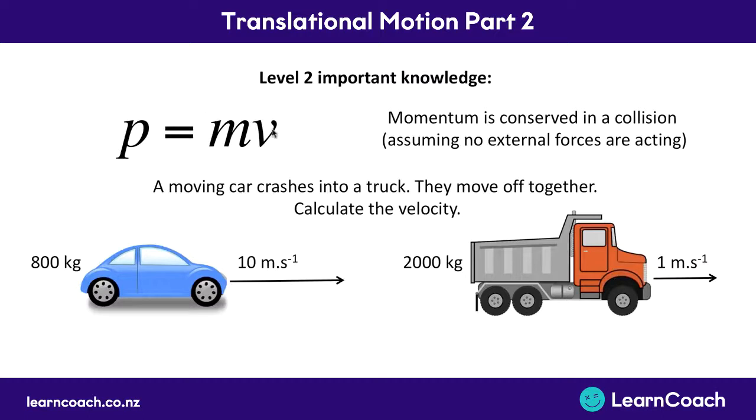Knowing that momentum is mass times velocity, we can get the momentum of this car here on the left. So 800 kgs times 10 meters per second is a momentum of 8,000. With the truck we've got 2,000 times 1 is a momentum of 2,000. So before they collide we've got a total momentum of 10,000.